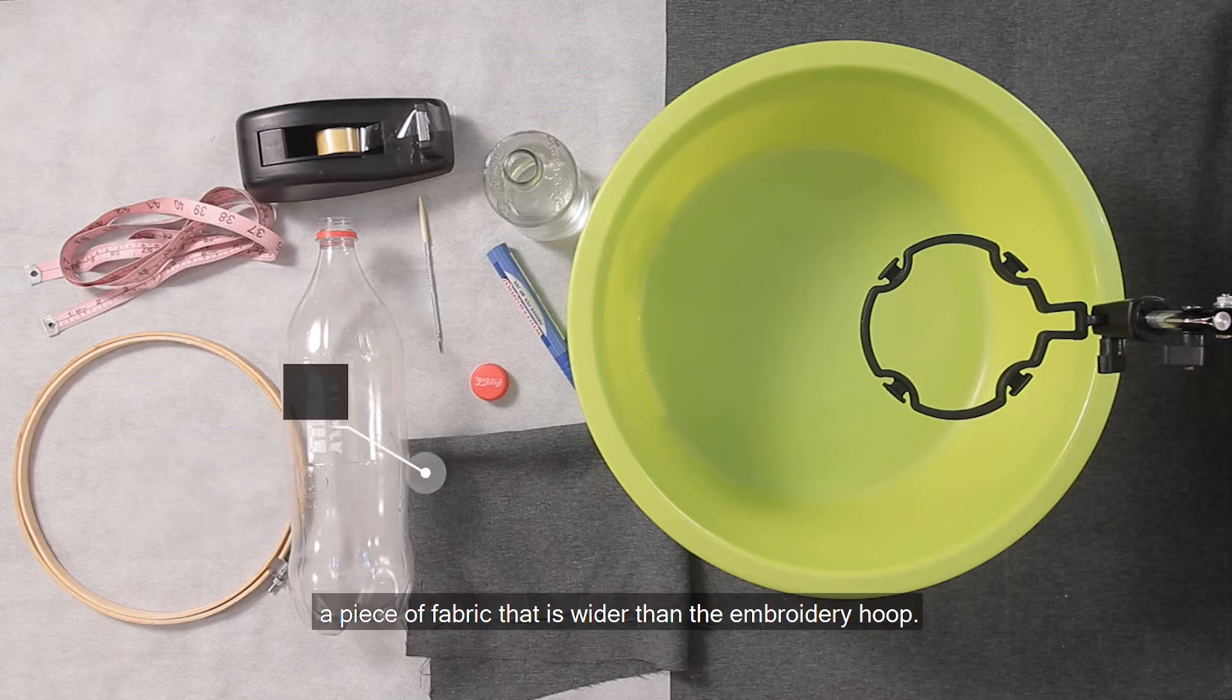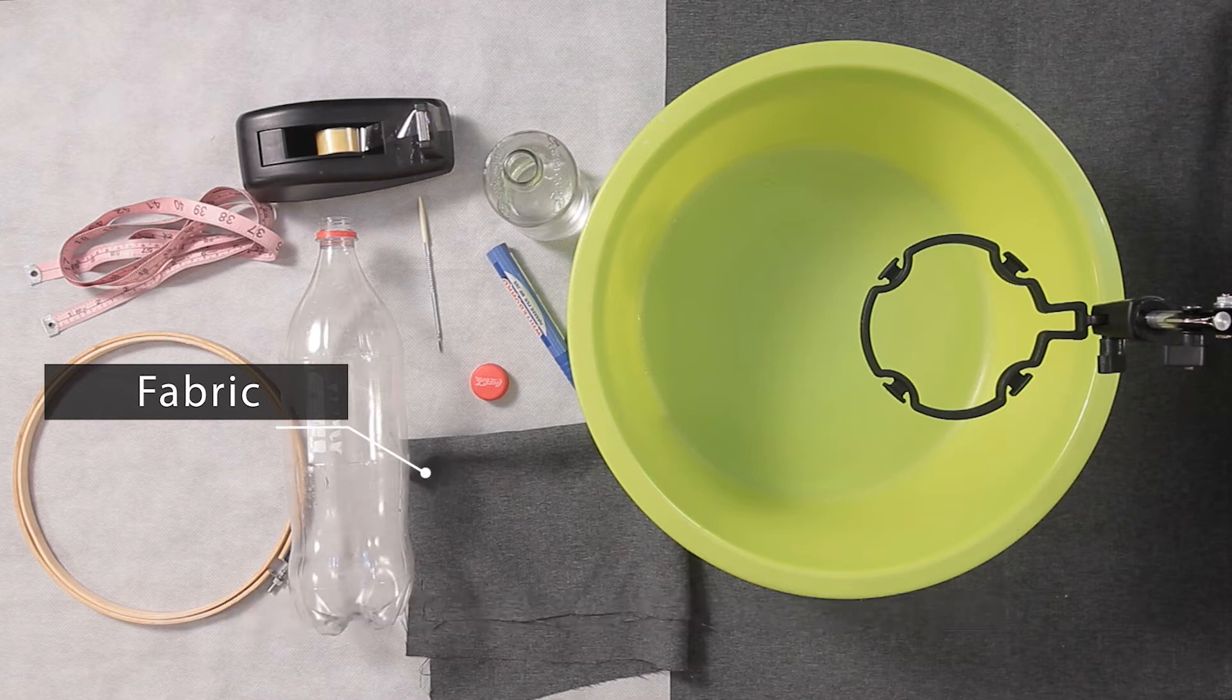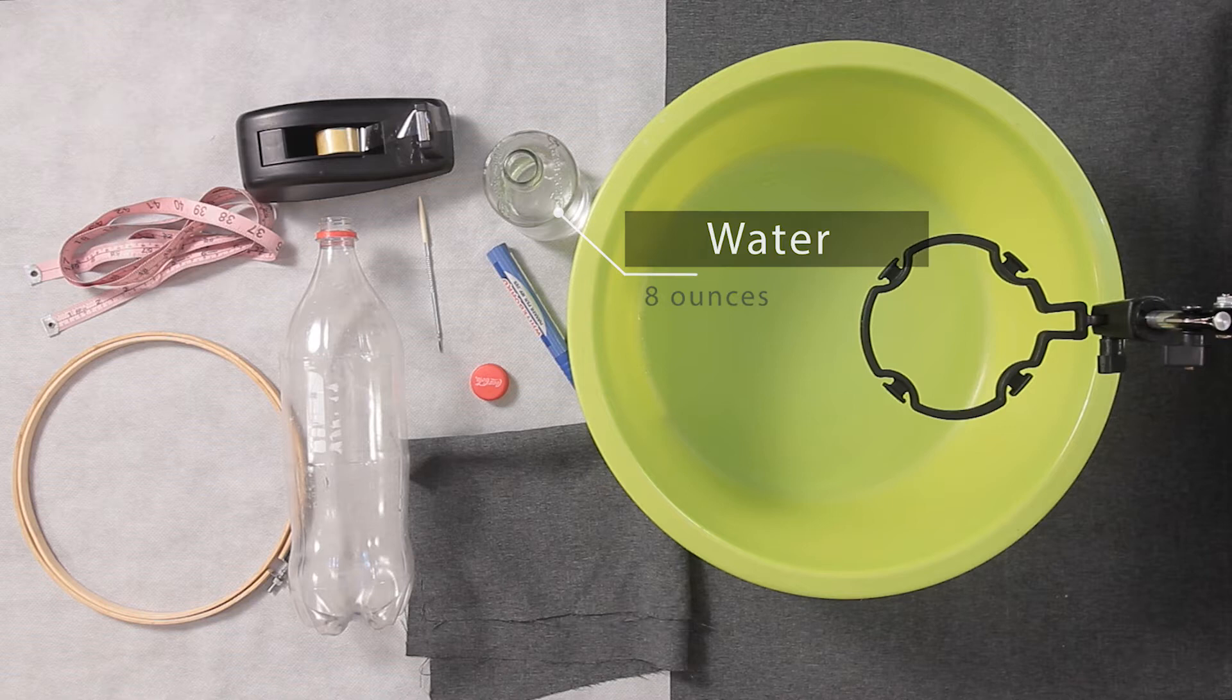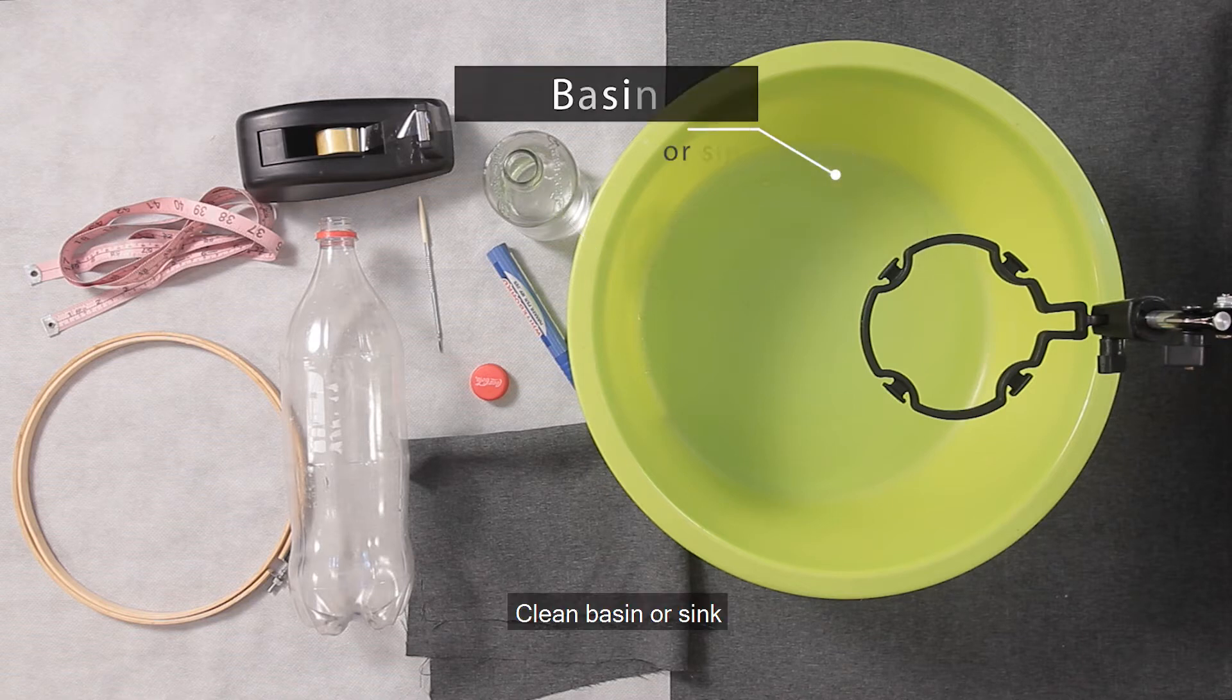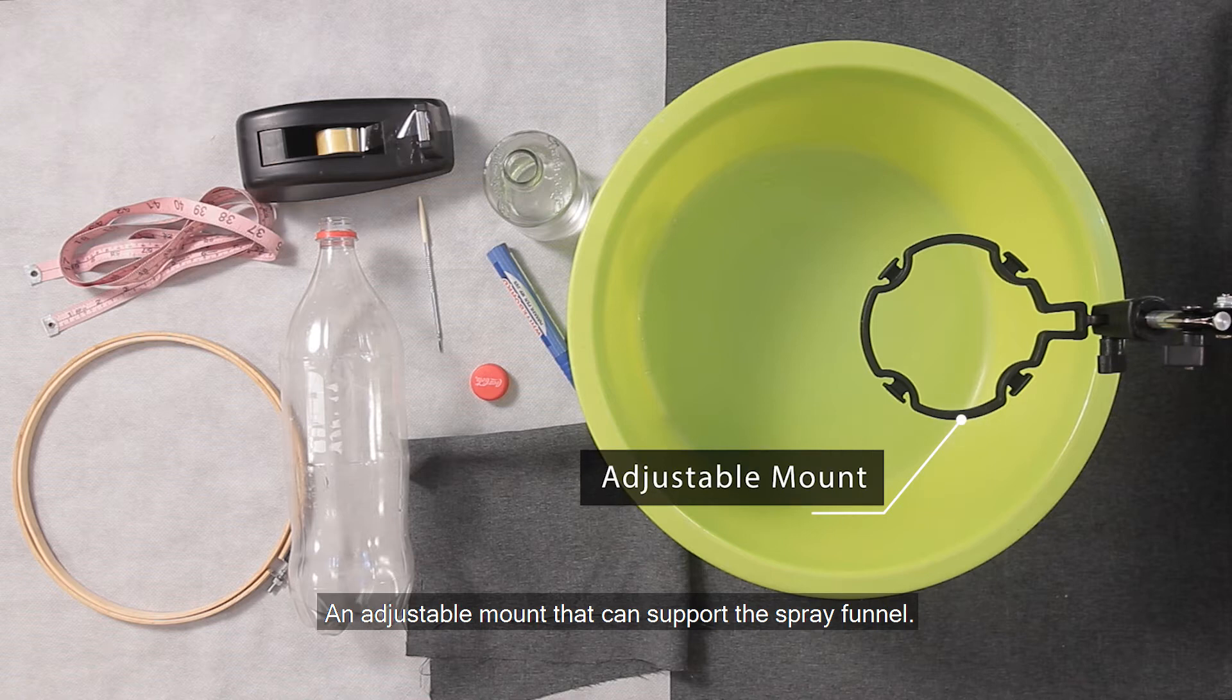Use a piece of fabric that is wider than the embroidery hoop. Uniform medium colors like blue or grey are easier to score than black. You'll also need 8 ounces of water, a clean basin or sink, and an adjustable mount that can support the spray funnel.